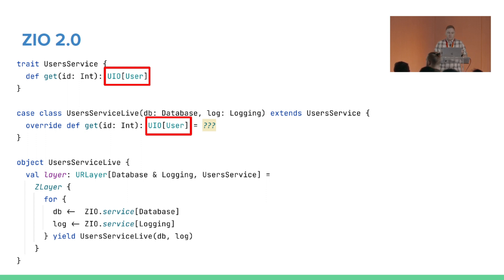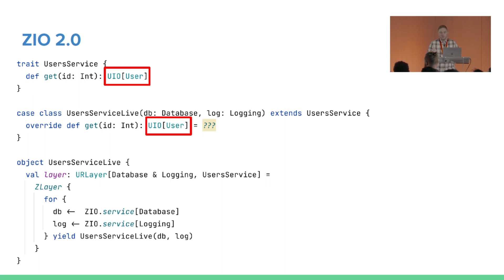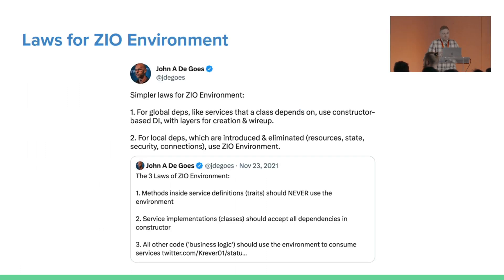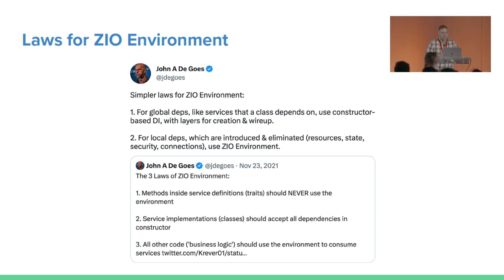This leads to a question: if we pass the parameters in constructor arguments, what do we need the R parameter for? If the return type is now UIO, or Task if you're using throwables, what do we need the R parameter for? Not too long ago, John tweeted a reply clarifying this, and essentially this answer — the simple laws for ZIO environment — kind of retcons the purpose of the R parameter.